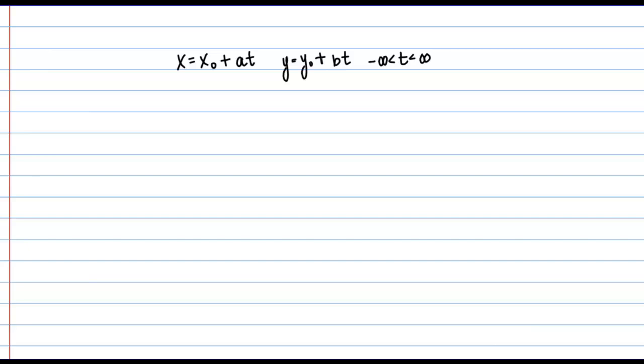To eliminate the parameter, we start with one of our equations. I'll start with the X equation and solve for T. Solving for T gives us T equals X minus X₀ over A. Now I'm going to take this expression for T and substitute it into the Y equation.